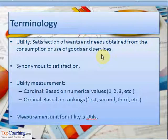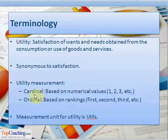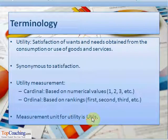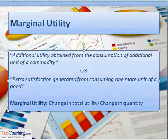In principle, utility measurement can take one of two forms. The first form is the cardinal form, which is based on numerical values such as 1, 2, 3, etc. The second form is the ordinal form, which is based on rankings such as first, second, third, and so on. The unit of measurement for utility is utils.